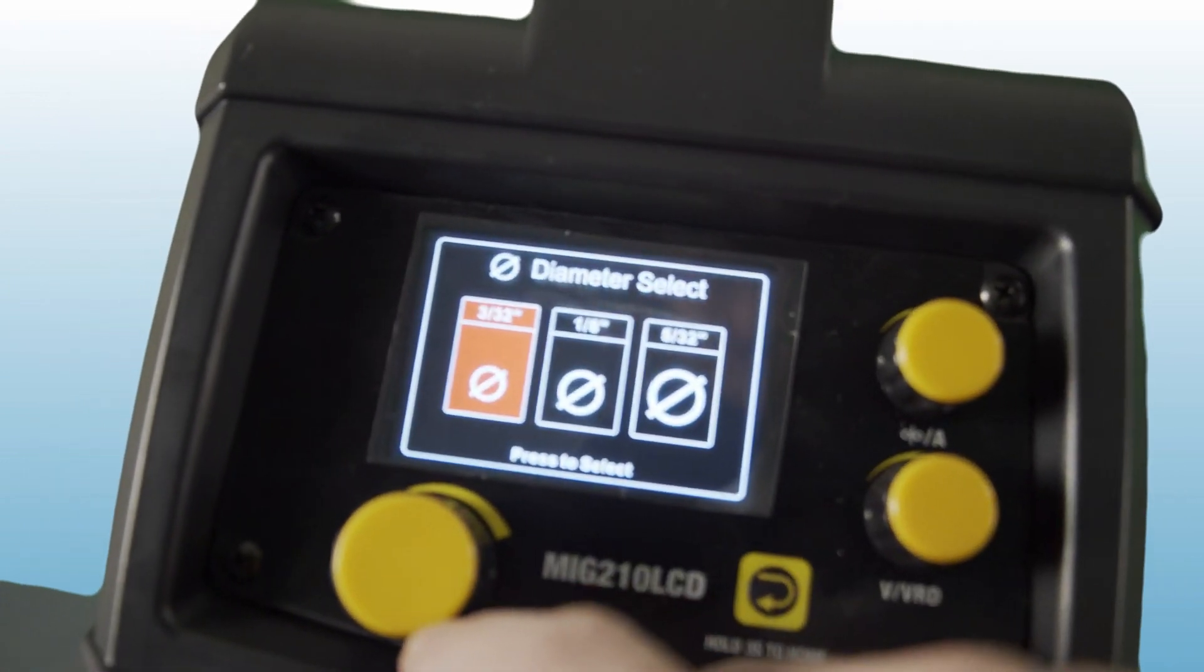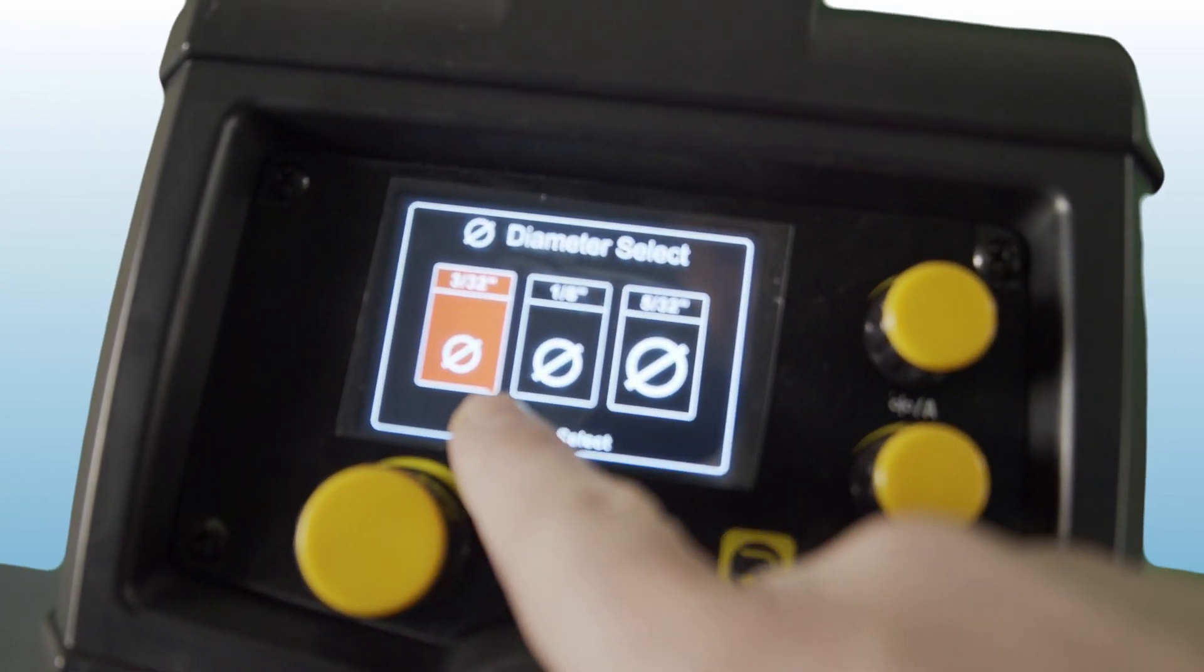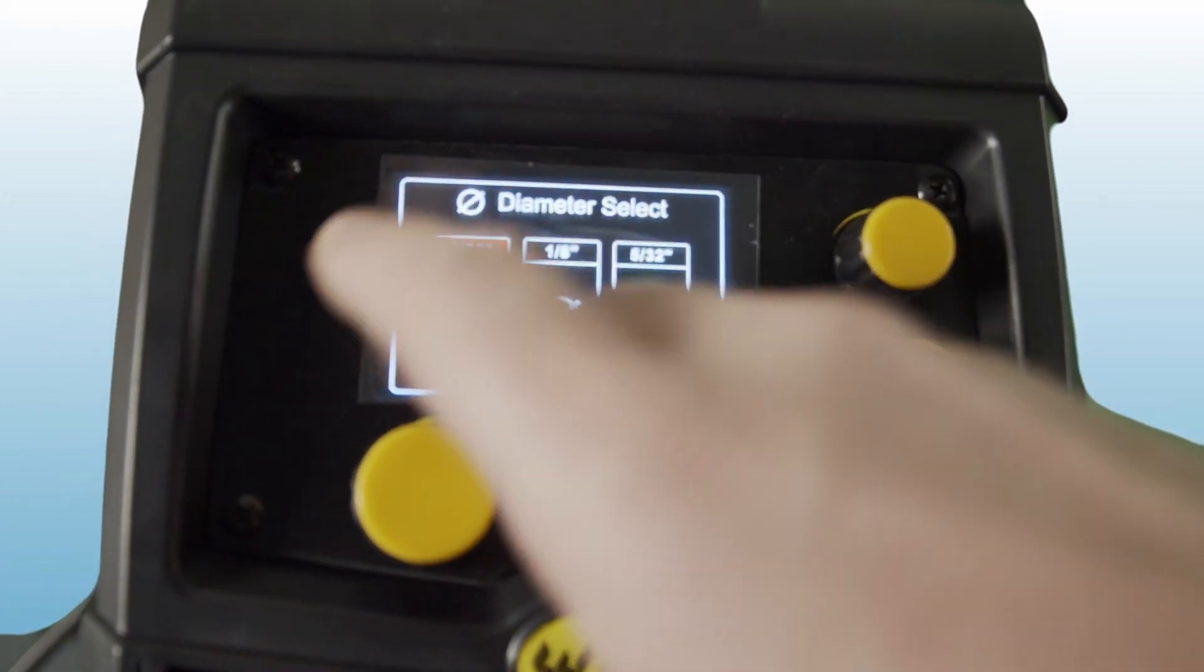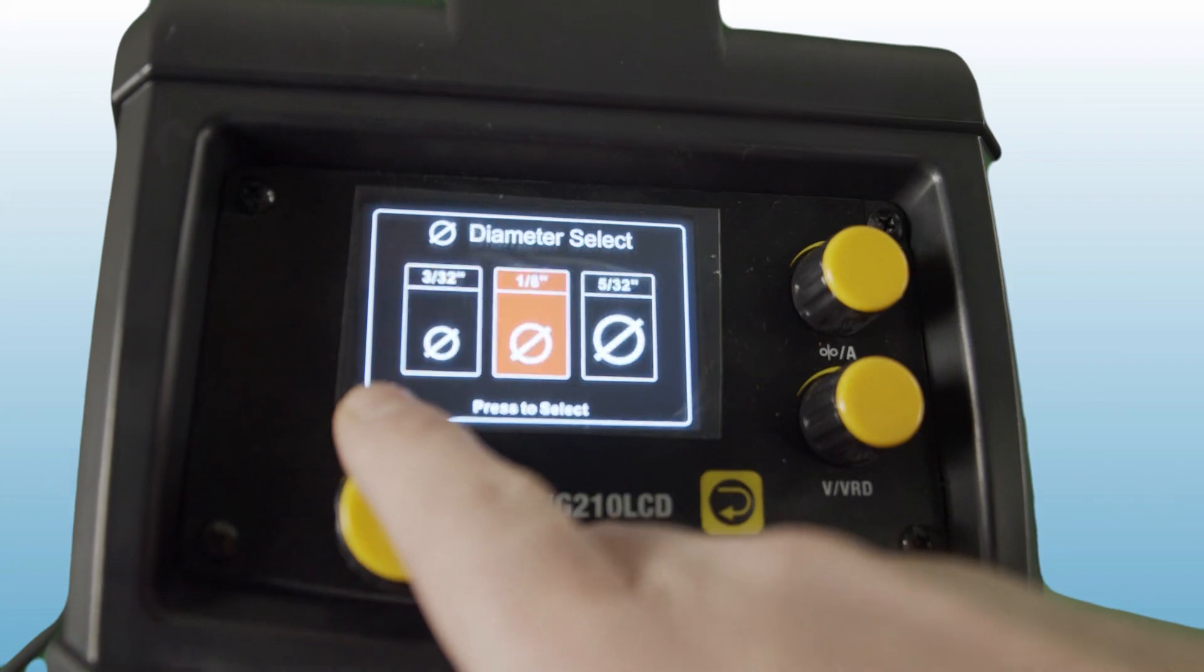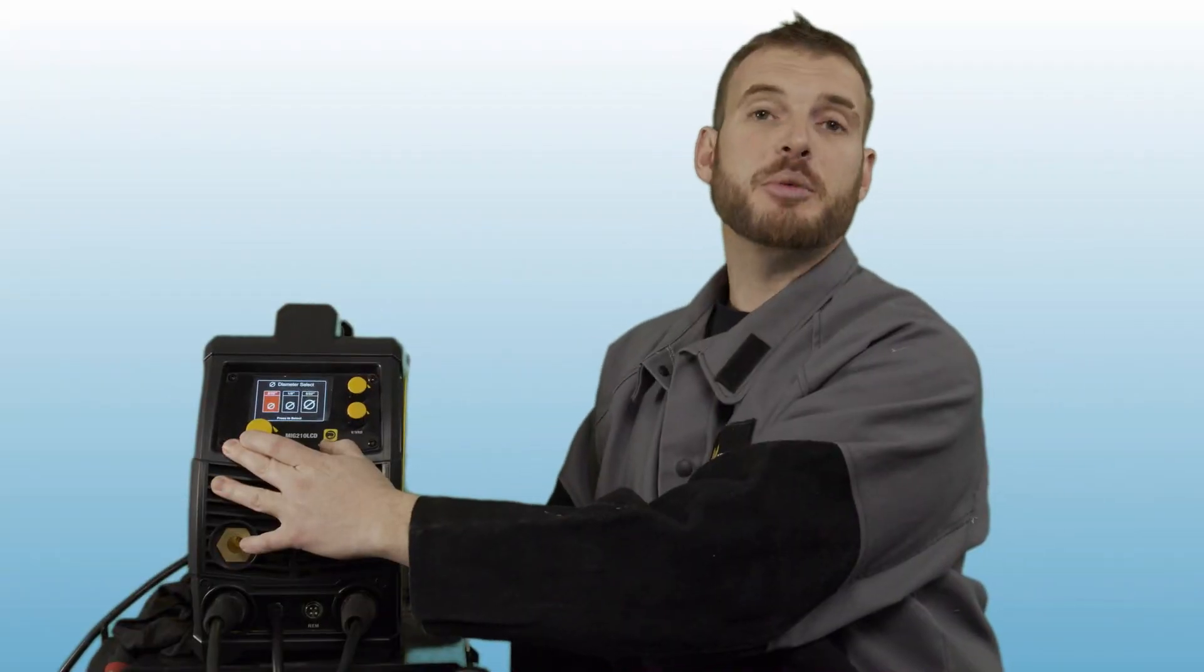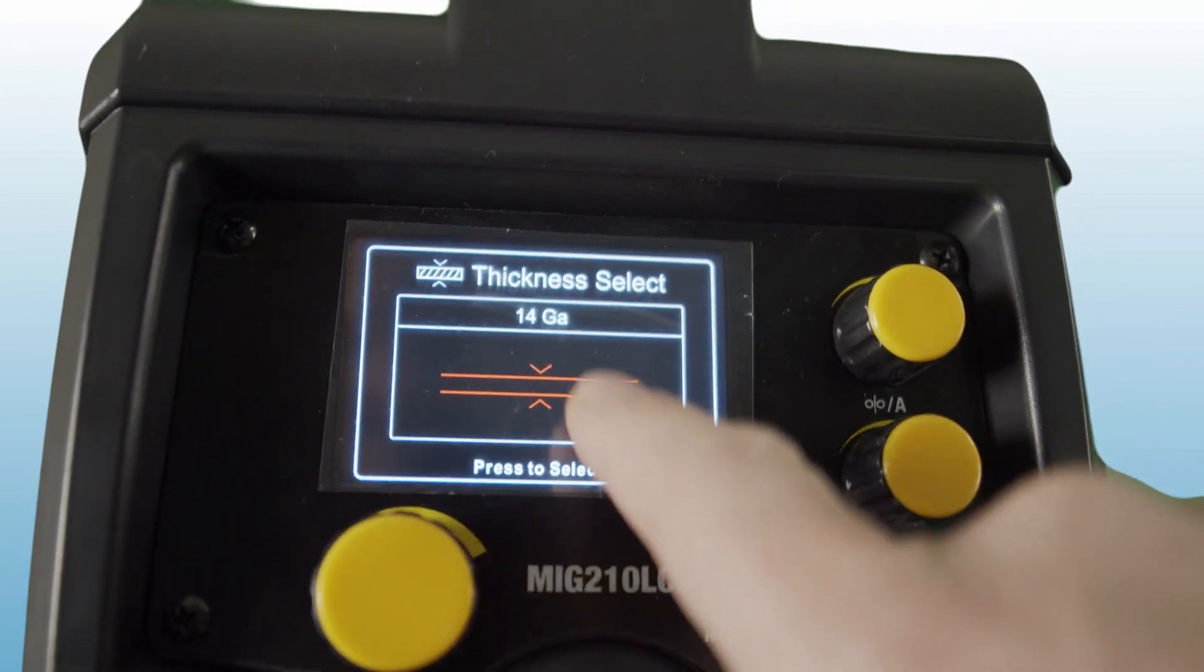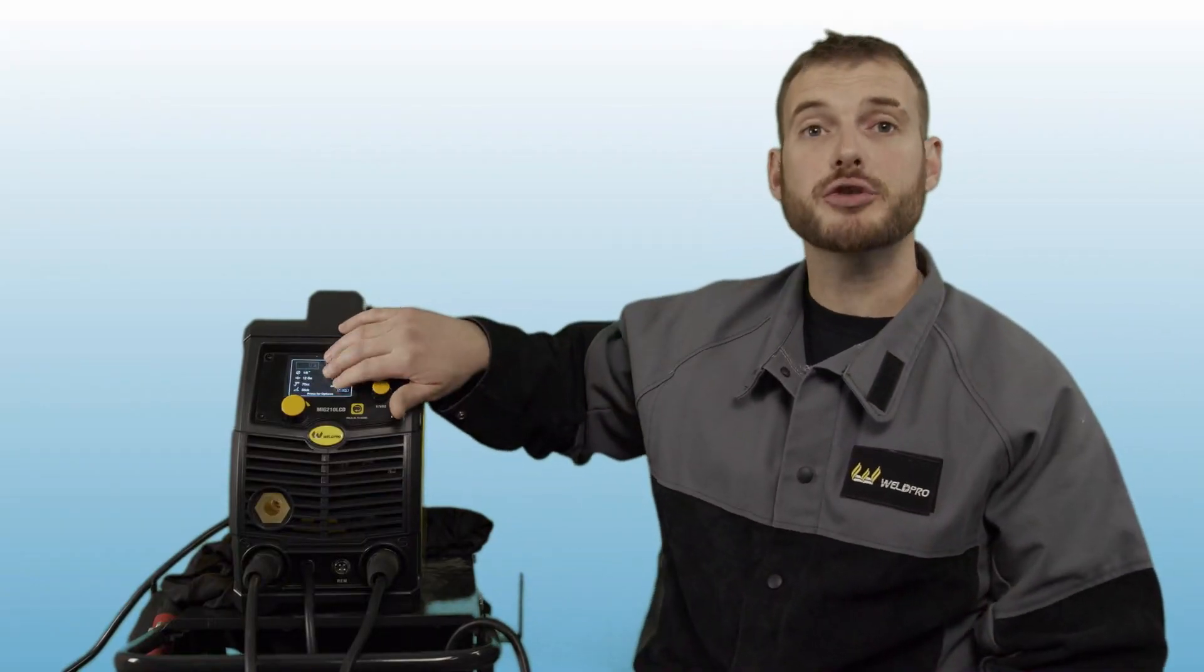The machine will next request that you input the electrode diameter. This will help the MIG 210 LCD recommend settings based on your material thickness and your electrode size. For these purposes I'm going to select eighth inch. Next the machine is requesting a material thickness. Now that we've been through the entire menu you can see all of your choices reflected on the main display.